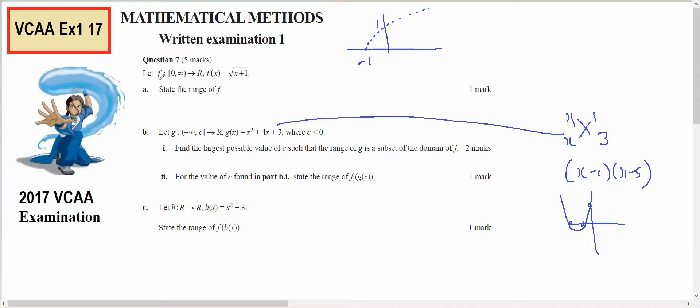I've got f of x, which is the square root of x plus 1. Normally f of x has been translated one unit to the left and would look like this.